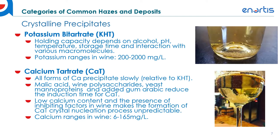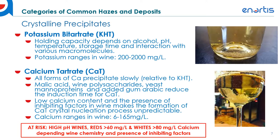Unfortunately, it's quite a complex issue for the wine industry, as it takes much longer for these crystals to nucleate. What happens frequently is four to six weeks after bottling we can see their presence. It mostly appears as a very fine, micronized crystal compared to potassium bitartrate, which is much more flaky. Calcium ranges in wine are from 6 to 165 milligrams per liter. At-risk wines include wines with a high pH; in red wines, calcium over 60 mg/L is considered at-risk, and for white wines, anything above 80 mg/L is considered at-risk.